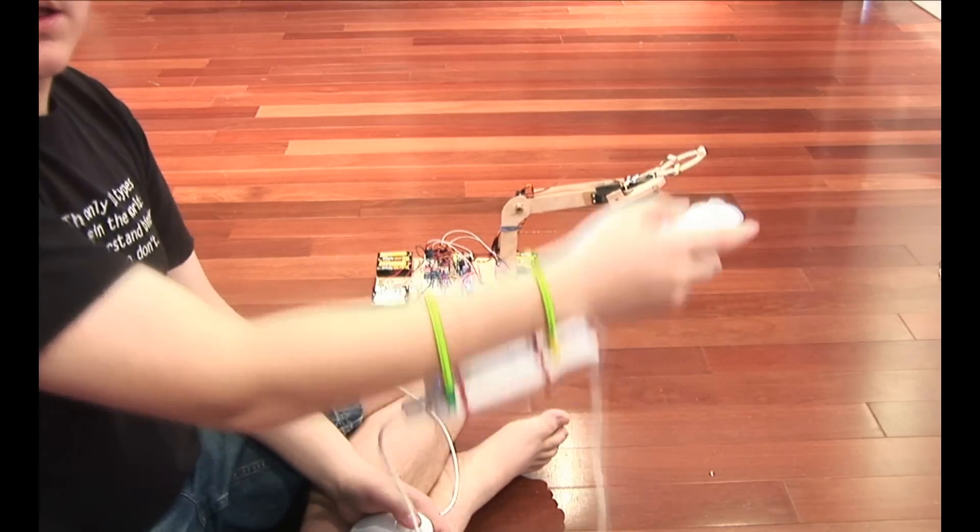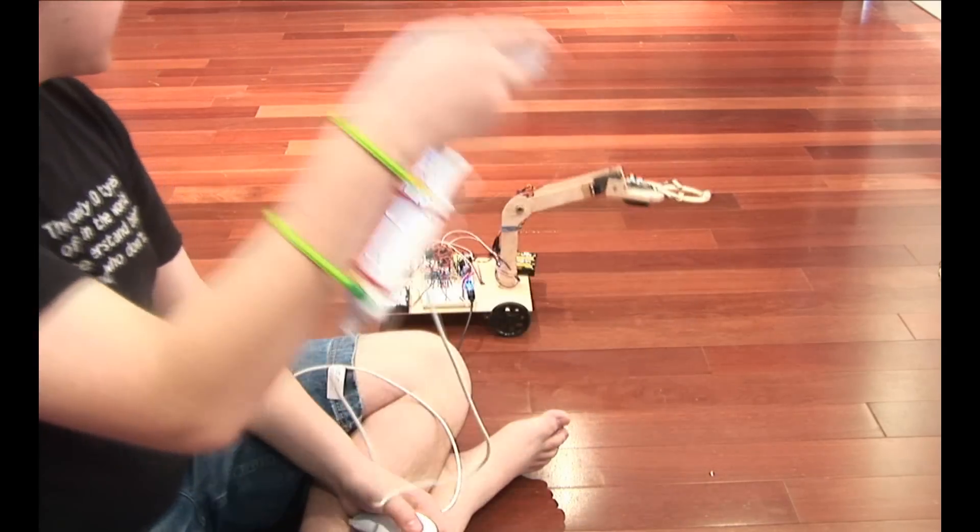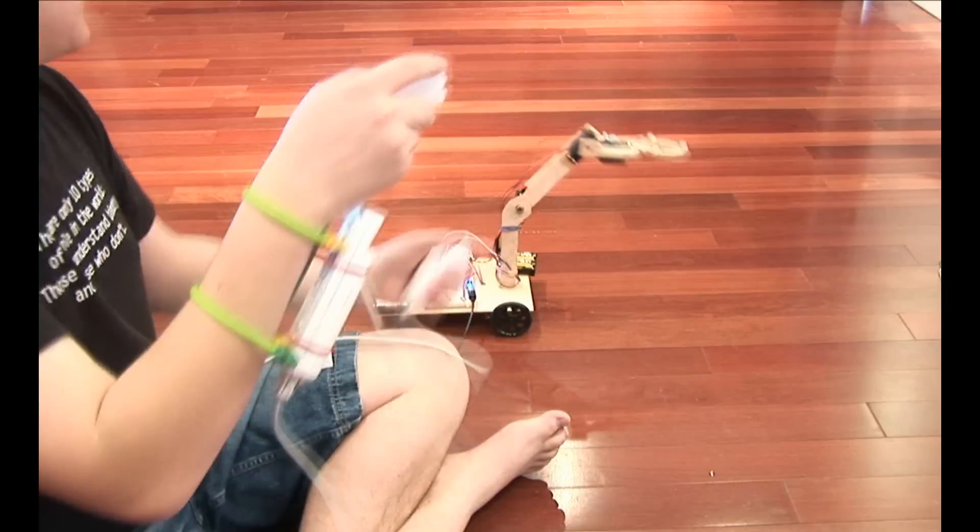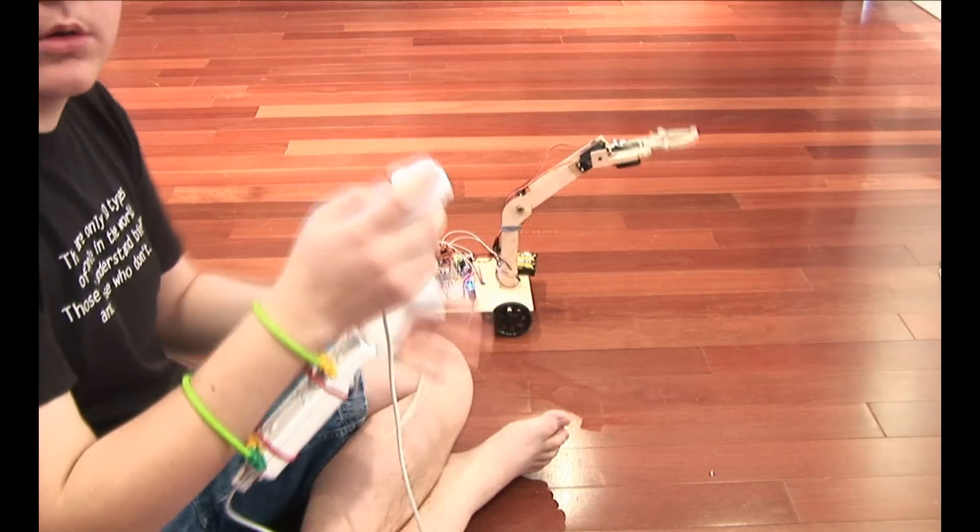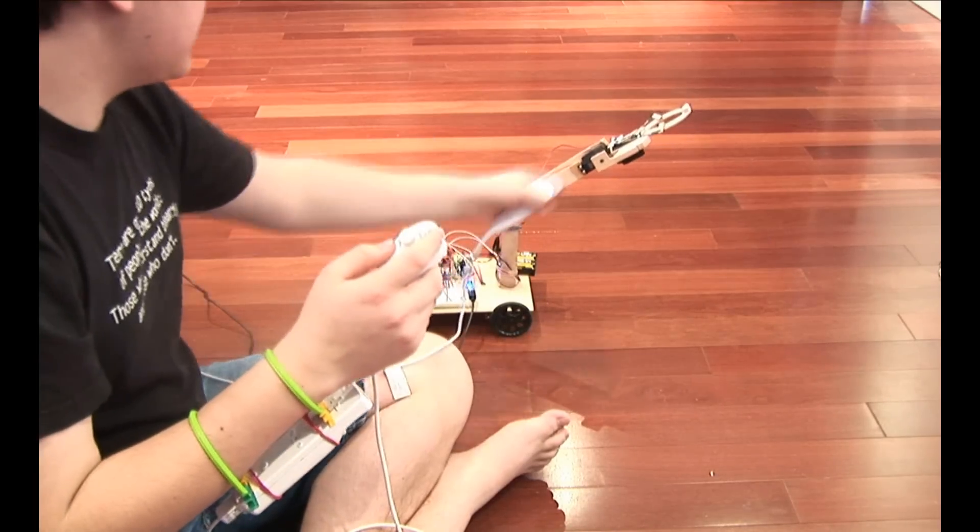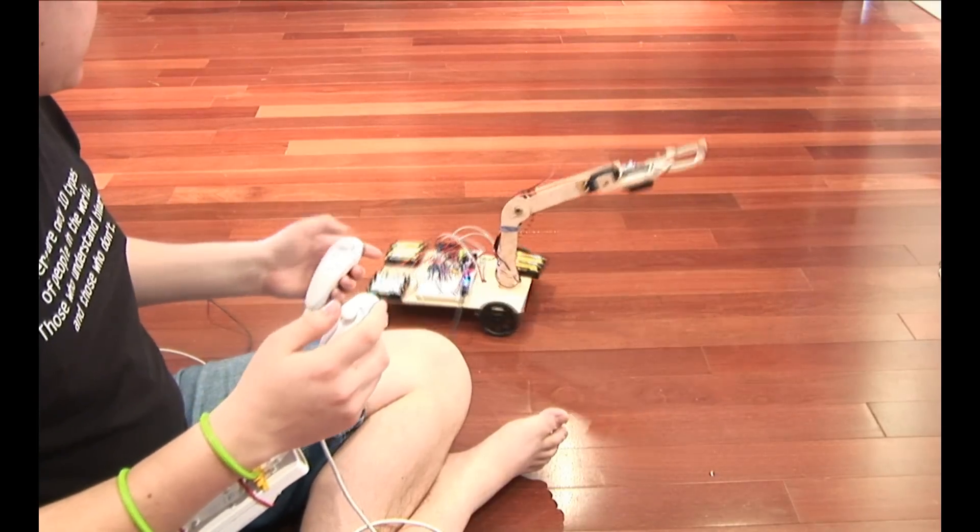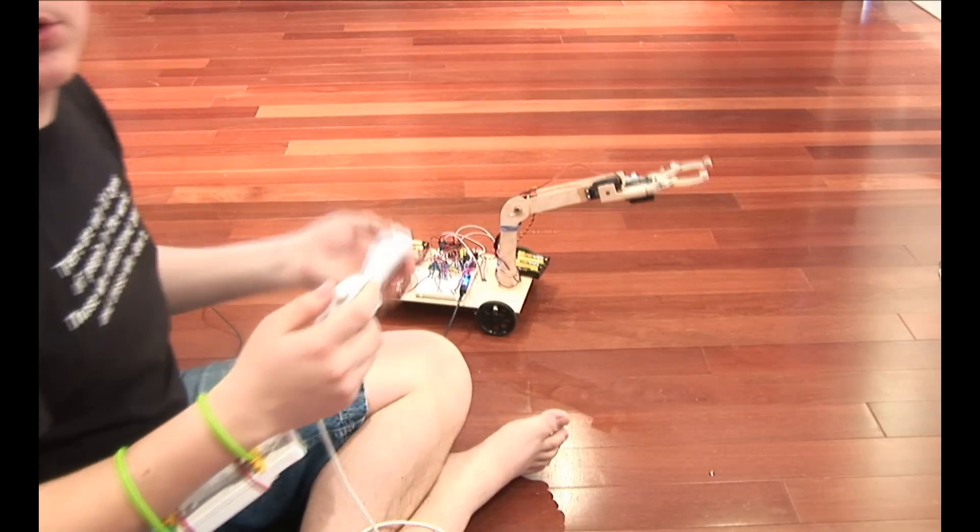If I angle the Wii Remote, it controls the midsection of the arm. There is no motor or joint here. It's just here, here, and for the claw. And of course, there are two motors for the wheels.